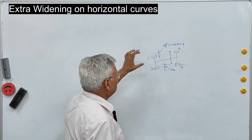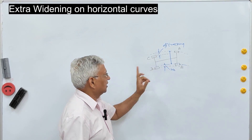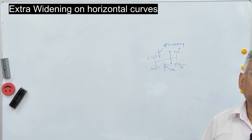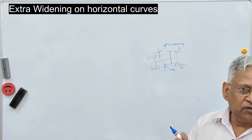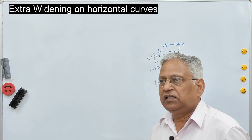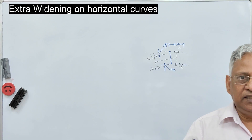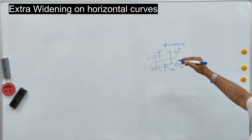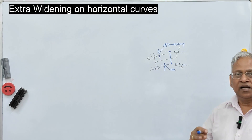When there is no super elevation on the road, this is the movement of two axles — the front axle and the rear axle. Even in case of a super elevated road, the super elevation is provided for a particular design speed. But the actual speed of the vehicle is never equal to the design speed — it is either more or less. Therefore, super elevation provided will be either in excess or in deficit. When the speed is high, the outer wheel will try to take a path outside the path taken by the inner wheel — again, off-tracking.